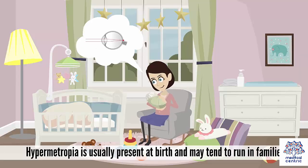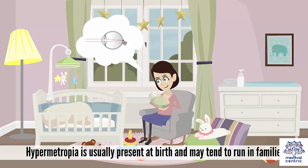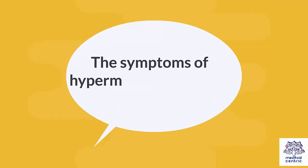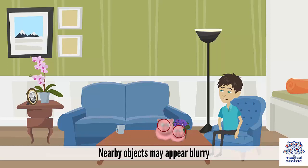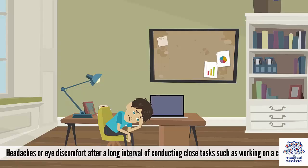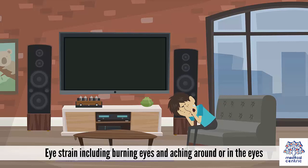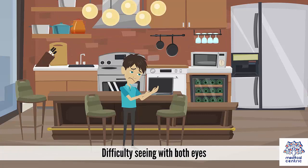Hypermetropia is usually present at birth and may tend to run in families. Symptoms include nearby objects appearing blurry, headaches or eye discomfort after prolonged close tasks such as working on a computer, reading, or writing, eye strain including burning eyes and aching around or in the eyes, and difficulty seeing with both eyes.